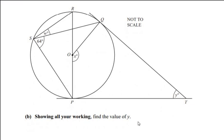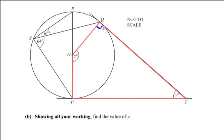Now let us find the value of y. The angle y is in the quadrilateral QOPT. Note that this is not a cyclic quadrilateral because point T is not on the circle. We need to remember that a tangent always makes 90 degrees with the radius. TQ is a tangent and OQ is a radius, so angle at Q is 90 degrees. Similarly, TP is a tangent and OP is the radius, so angle at P is also 90 degrees.